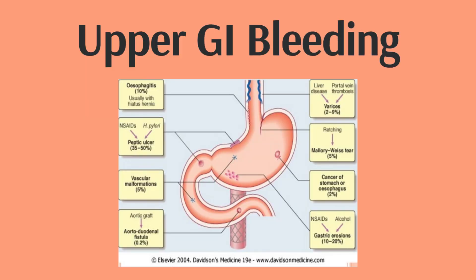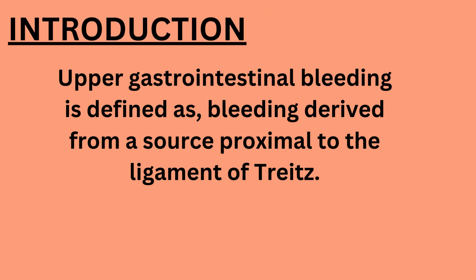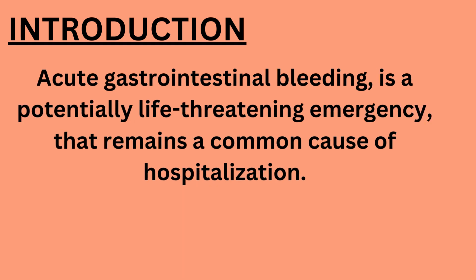Upper GI bleeding. Introduction. Upper gastrointestinal bleeding is defined as bleeding derived from a source proximal to the ligament of Treitz. Acute gastrointestinal bleeding is a potentially life-threatening emergency that remains a common cause of hospitalization.